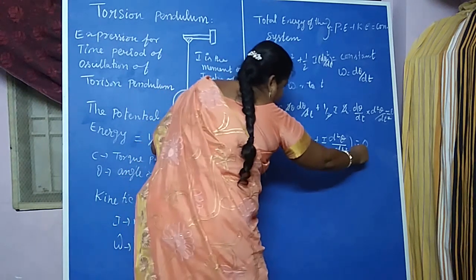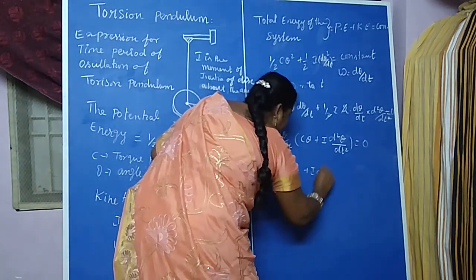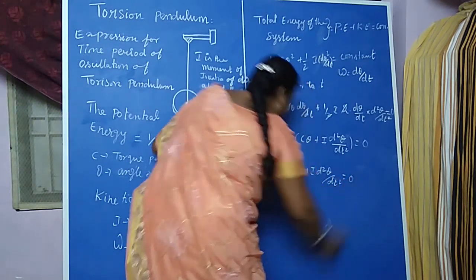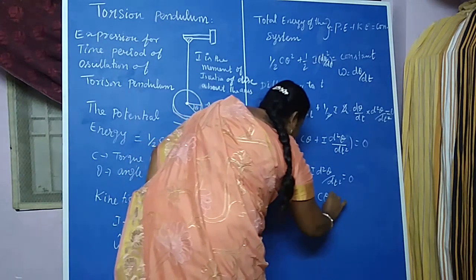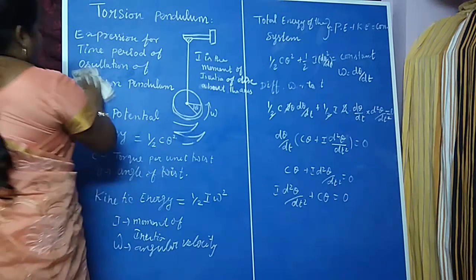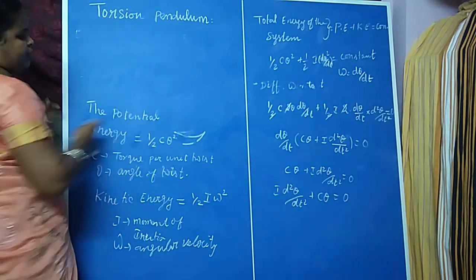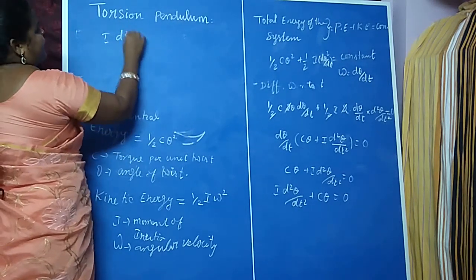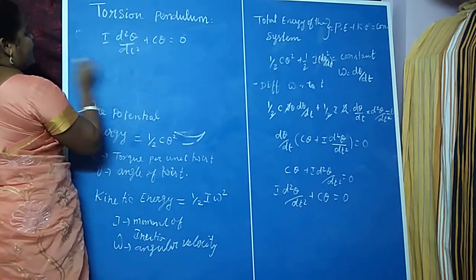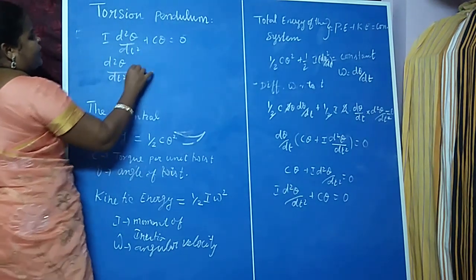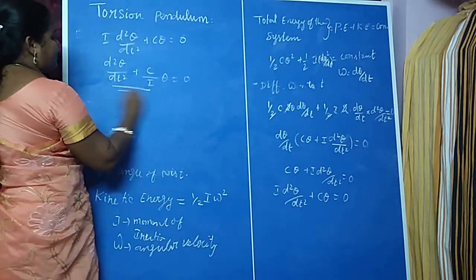Simplifying and taking out d theta by dt as common, we get: d theta by dt times (c theta plus I times d squared theta by dt squared) equals zero. Since d theta by dt cannot be zero, we get: I d squared theta by dt squared plus c theta equals zero, which gives d squared theta by dt squared plus (c divided by I) times theta equals zero. This is the equation for simple harmonic motion.